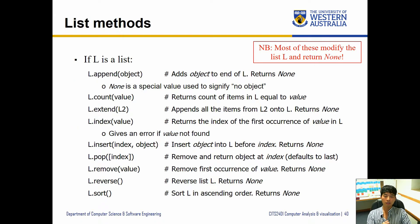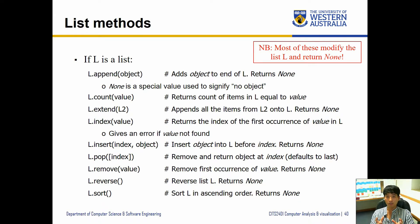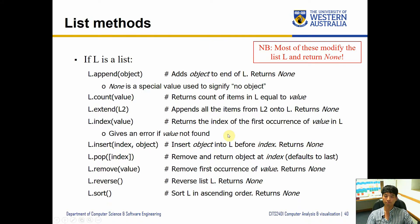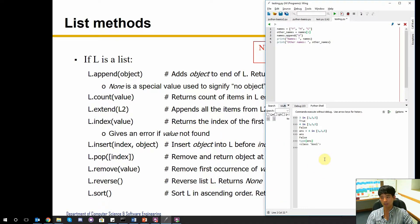In addition to this, we have different list methods. Lists work with generic objects as a container, so they don't have as many methods as strings do. However, these are sufficient to manipulate lists and use them. Let's have a look at some of those.